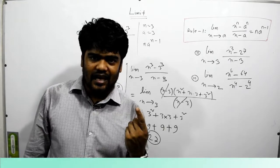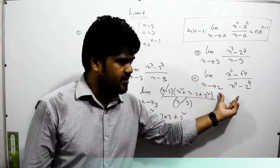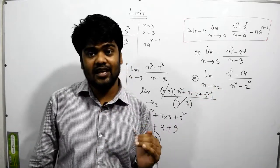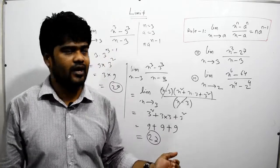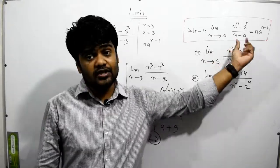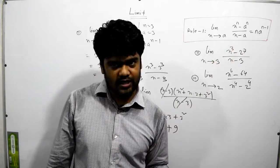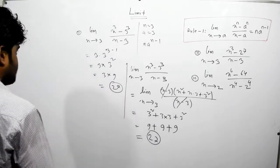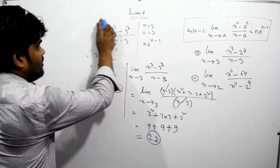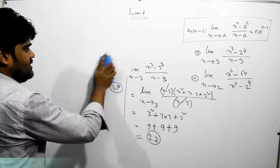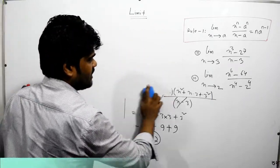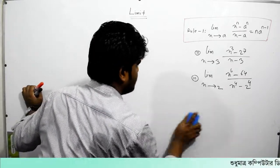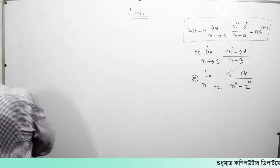That is the concept of how you can calculate the limit. How we apply the rules — you will see the pictures. So that is the same thing. Let's put 3 numbers.